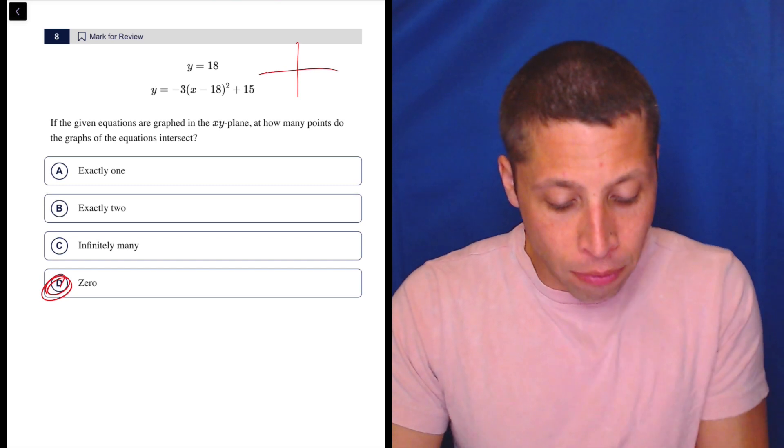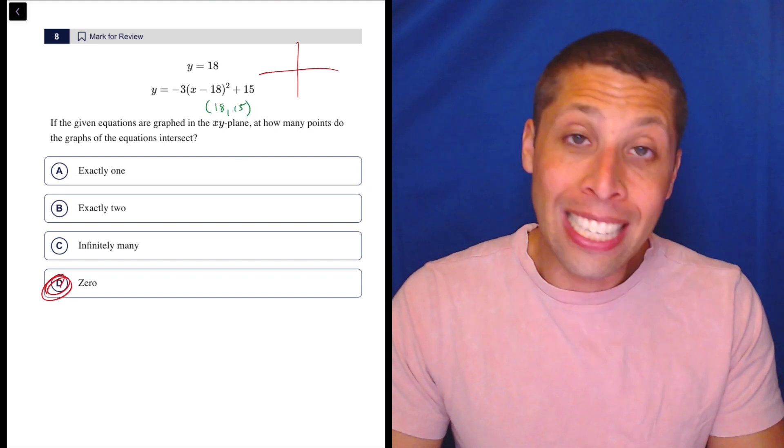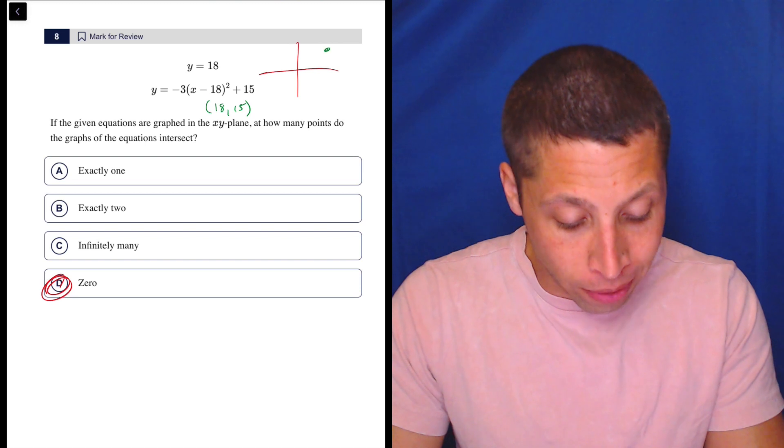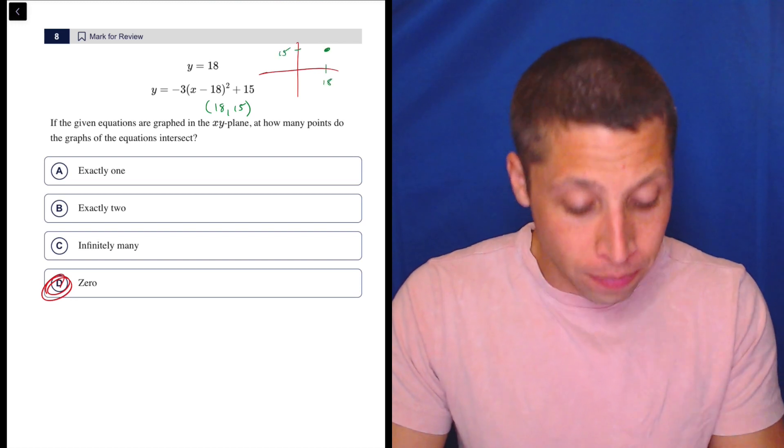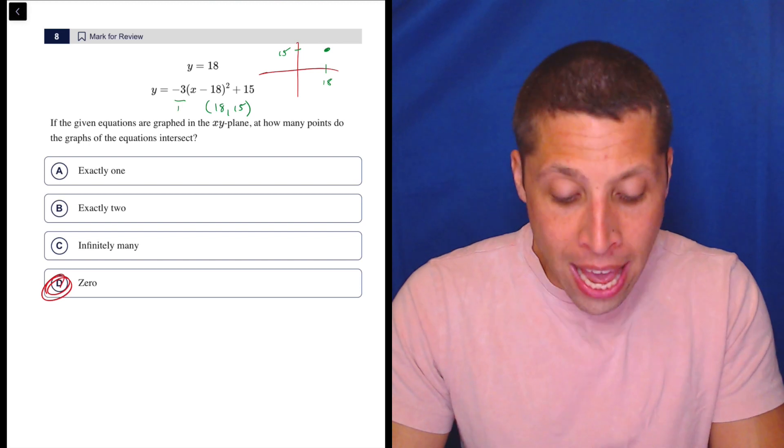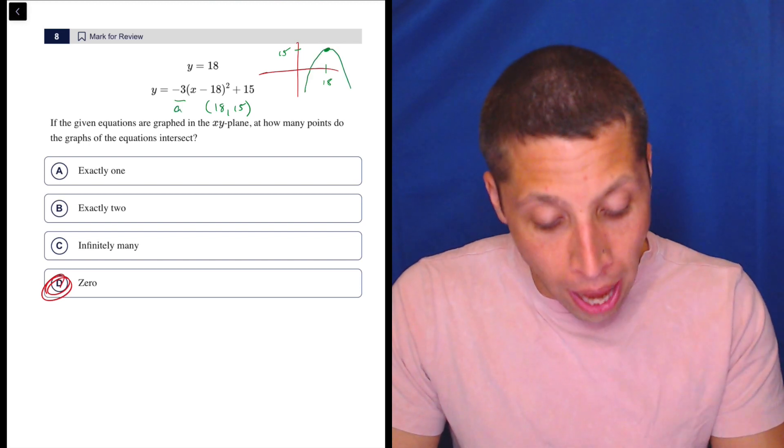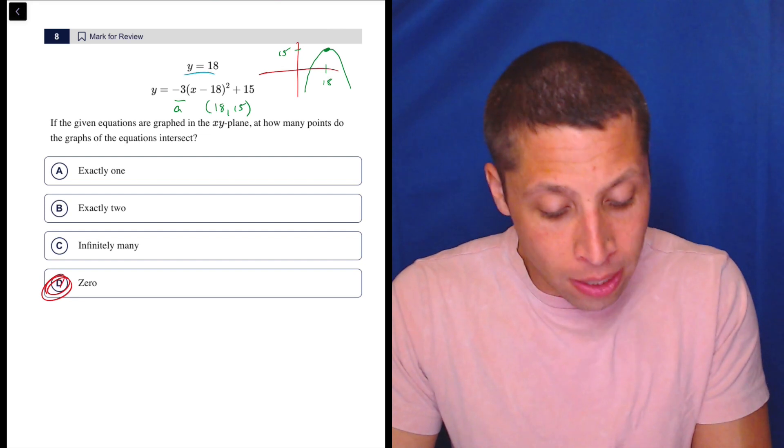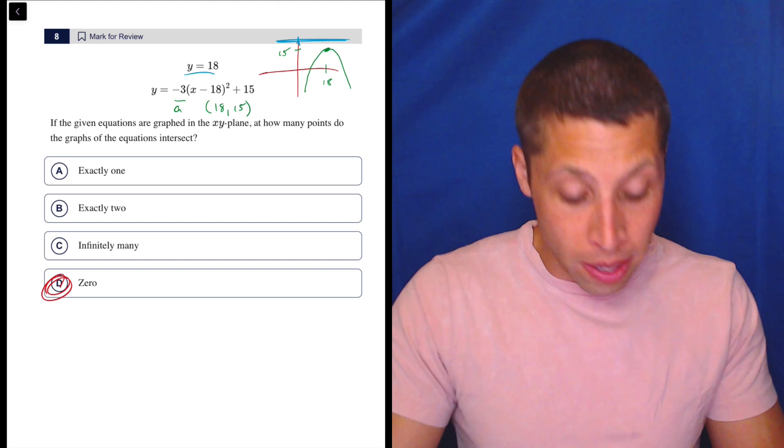It's telling me that I have a vertex at 18, 15. So that's 18 on the x, 15 on the y. So that's somewhere over here, 18, 15. And so then we know the a term is negative. That means it opens down. So there you go. And then if y is equal to 18, well, then that's up here somewhere. And there you go. That is proof that it doesn't fit.